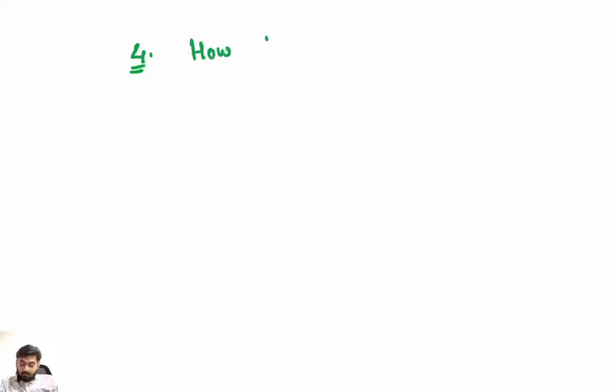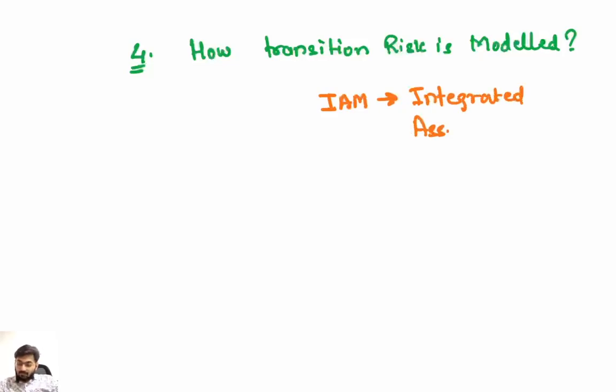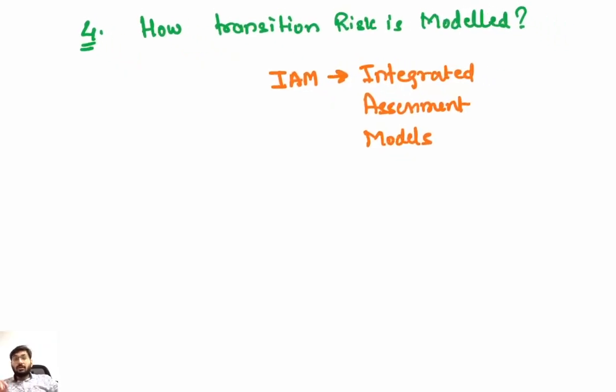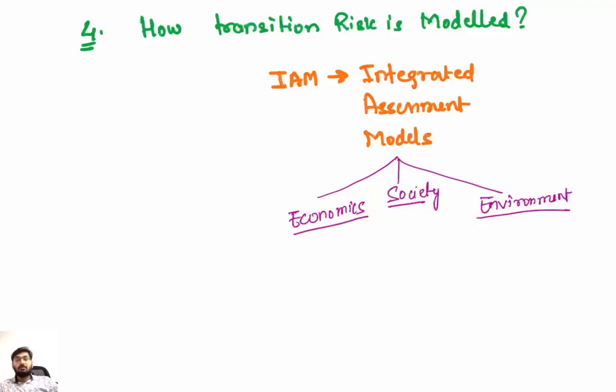Now the fourth point which we are going to cover in this topic is: How is transition risk modeled? See, we are going to use a method or model - that is IAM: Integrated Assessment Models. Now this model actually combines three aspects: economics, society, and environment.